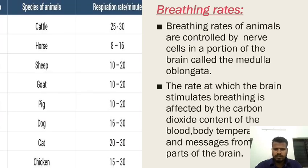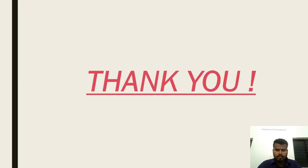Breathing rates of animals are controlled by nerve cells in a portion of the brain called the medulla oblongata. The rate at which the brain stimulates breathing is affected by the carbon dioxide content of the blood, body temperature, and messages from other parts of the brain. Thank you guys — please like and share.